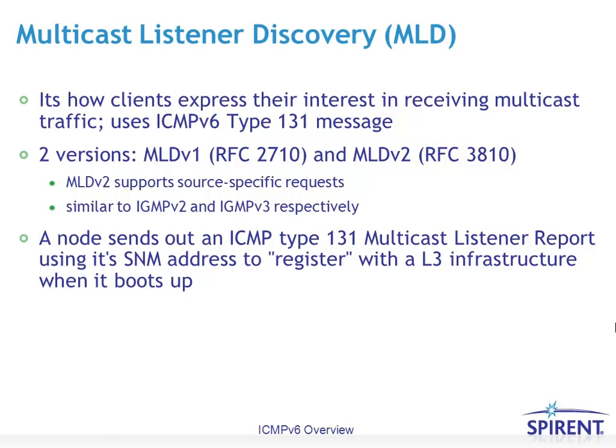ICMPv6 also provides a framework for MLD, or Multicast Listener Discovery protocol. Similar to IGMP — Internet Group Management Protocol — for IPv4, MLD is a way for clients to express their interest in receiving multicast traffic. It uses ICMPv6 message types 130 and 131. There are two versions: MLD version 1, described in RFC 2710, and MLD version 2, described in RFC 3810, which are functionally equivalent to IGMPv2 and IGMPv3 respectively. MLD version 2 supports source-specific requests. Additionally, when a node first boots up, it sends an MLD packet type 131 using its solicited-node multicast address to register with the Layer 3 infrastructure.